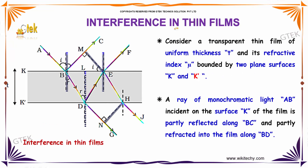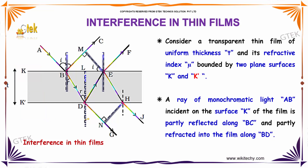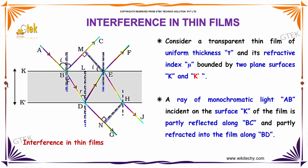If we talk about interference in thin films, consider a transparent thin film of uniform thickness t and refractive index mu. It is bounded by two plane surfaces k and k'. A ray of monochromatic light AB is incident on the surface k of the film, partially reflected along BC.